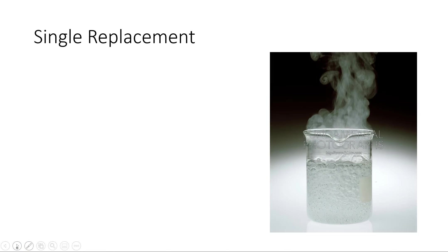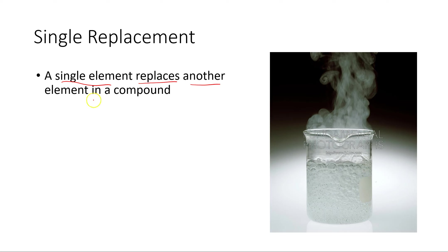Now a single replacement reaction is slightly more complex, but basically we have a single element that replaces another element as part of a compound. So here's how we could look at this. This is our pattern here, sticking with our letters for our patterns. So we have single element and then we have a compound. So remember, a compound is two or more elements chemically bonded together.